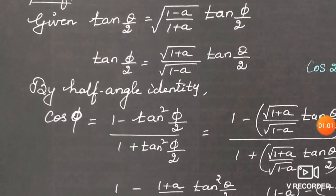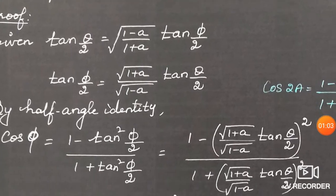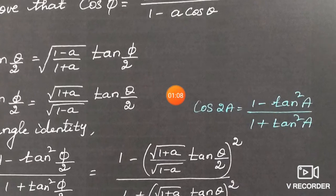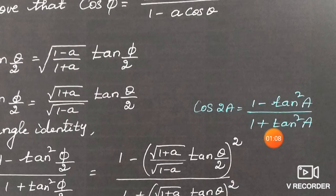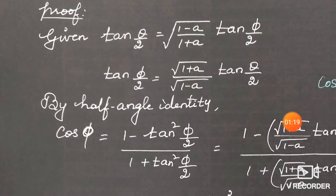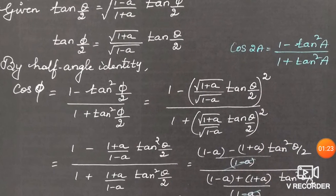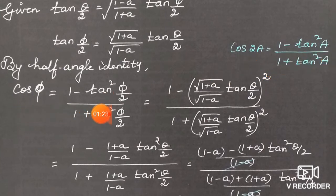By the half-angle identity, cos φ is related to tan(φ/2). From the double angle identity: cos(2a) = (1 - tan²a) / (1 + tan²a). Here, 2a is φ and a is φ/2. So applying the same identity: cos φ = (1 - tan²(φ/2)) / (1 + tan²(φ/2)).